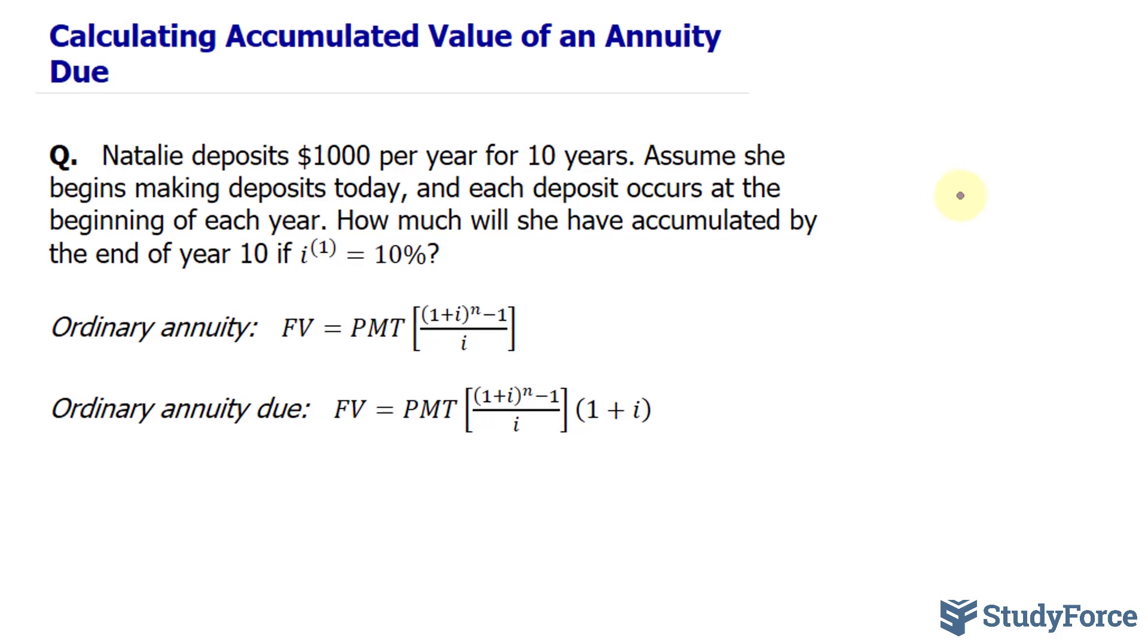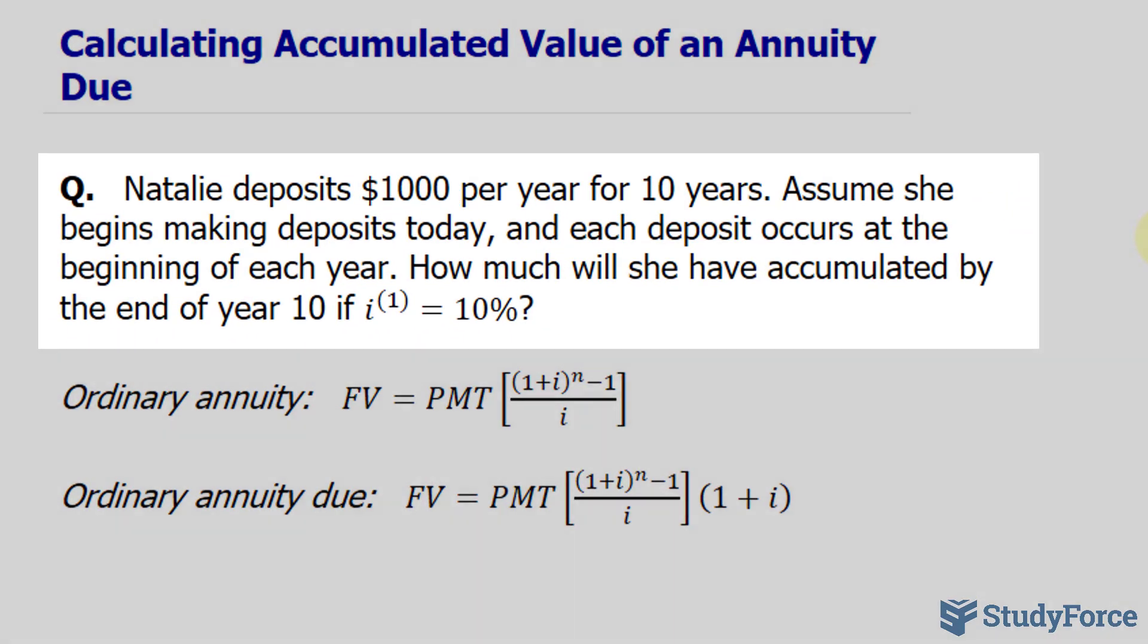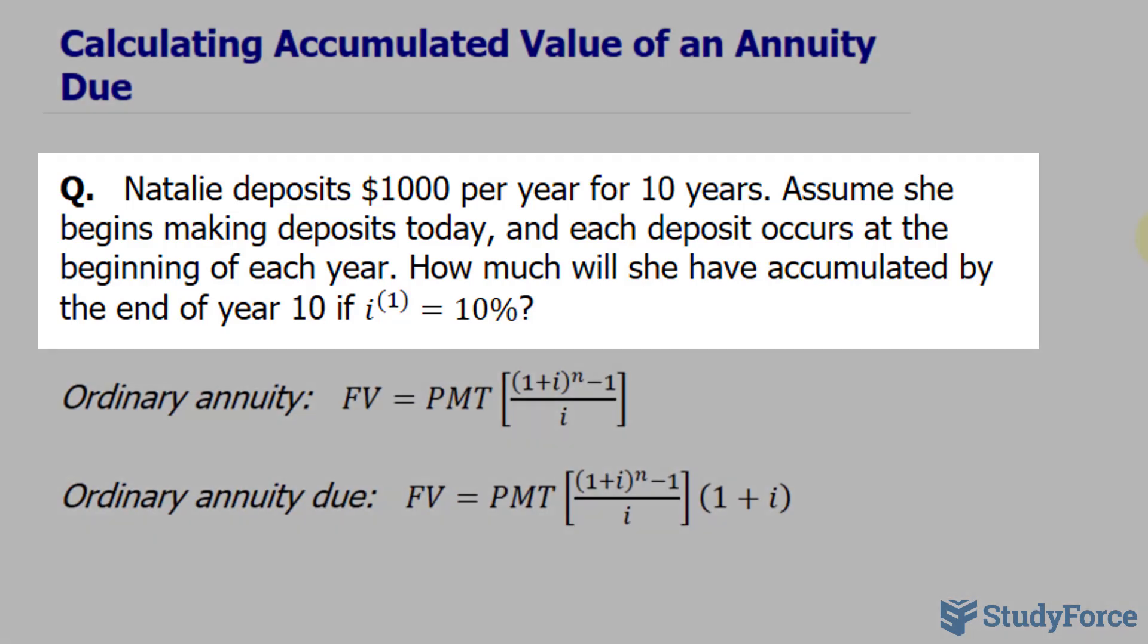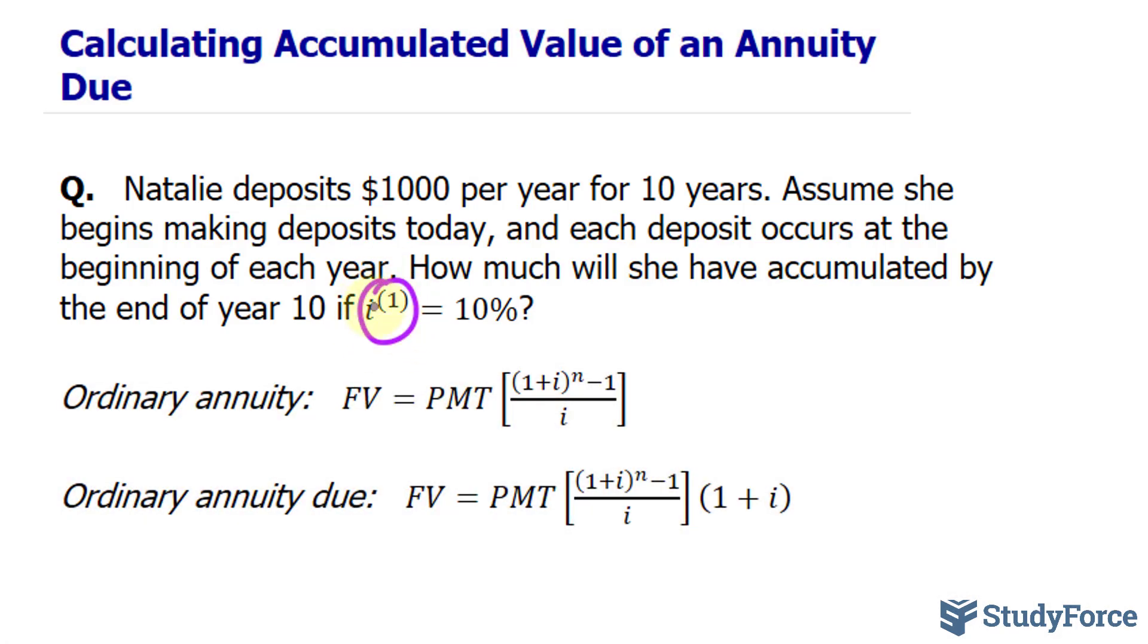We'll talk a little bit more about that after we read the question, which says: Natalie deposits $1,000 per year for 10 years. Assume she begins making deposits today, and each deposit occurs at the beginning of each year. How much will she have accumulated by the end of year 10 if the interest, which is compounded annually, is equal to 10%?